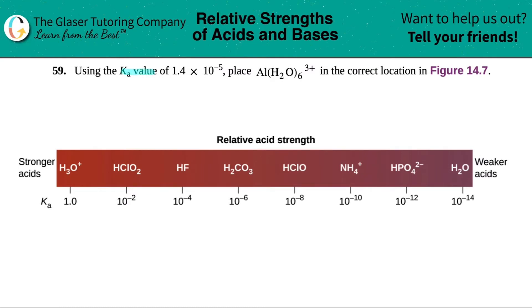Number 59. Using the Ka value of 1.4 times 10 to the negative 5th, place Al(H2O)6 3+ in the correct location in figure 14.7.